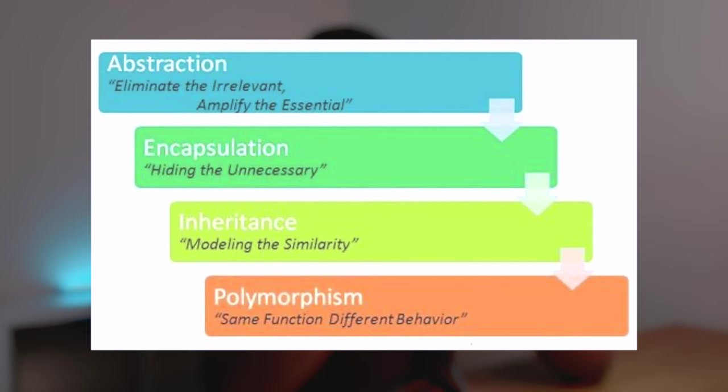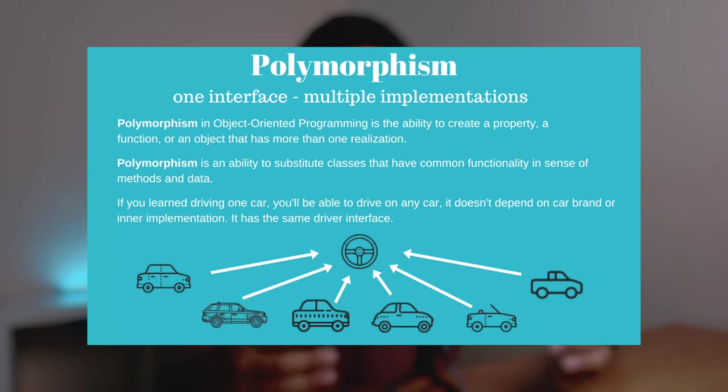The four main principles of object-oriented programming are: encapsulation; abstraction, which means hiding unnecessary things from the user's point of view; inheritance, which means when a class or object can be based on another class or object; and finally polymorphism, which means having many forms. For instance, one person like me can be a son, a brother, a teacher — I can behave differently in different circumstances. That's polymorphism.